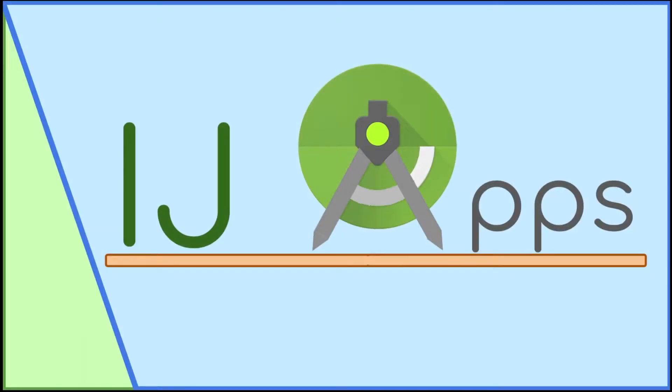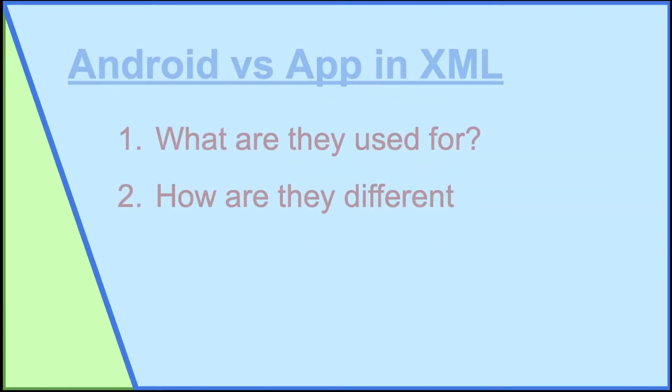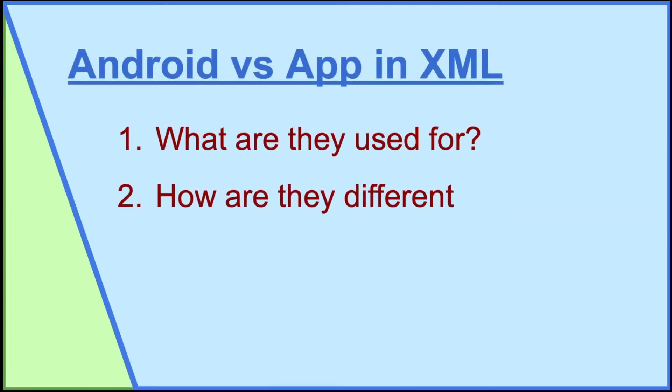In the previous short bit segment, I explained what application context is. In this tutorial, I'll be explaining the difference between Android and app in XML.